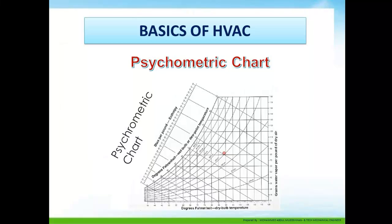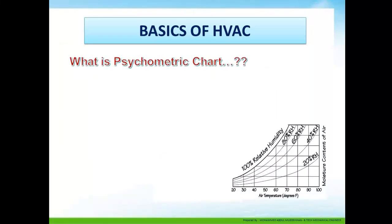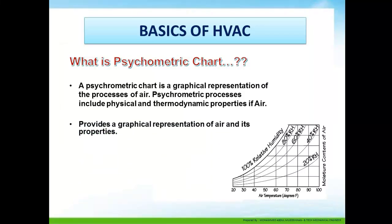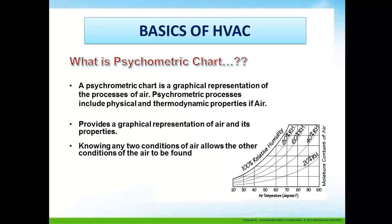Psychrometric chart is an important tool used to identify air properties. A psychrometric chart is a graphical representation of the physical and thermodynamic properties of air. It provides a graphical representation of air and its properties. Knowing any two conditions of airflow allows the other conditions of the air to be found.